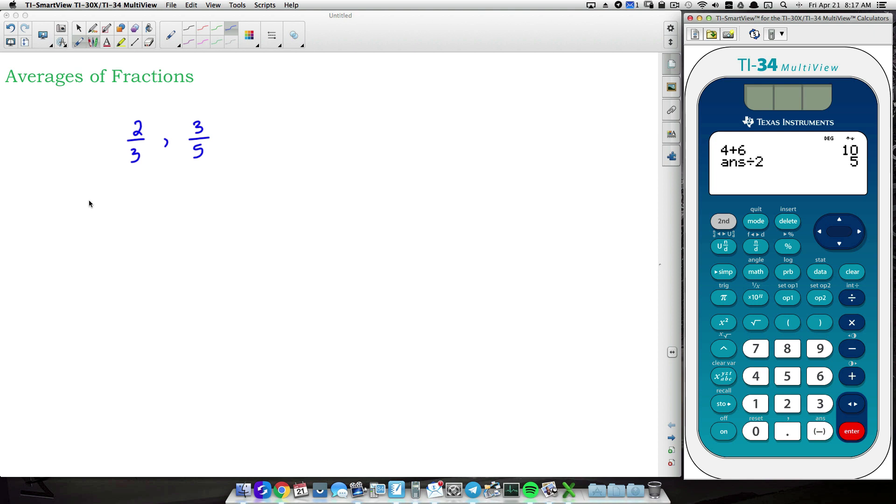You want to add them together, and you want to divide by how many fractions you have. Just like here, I divided by 2 because I was adding two numbers. Now, you don't always divide by 2. You divide by how many numbers you're adding together. So keep that in mind.